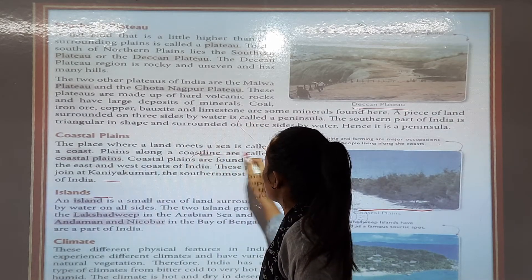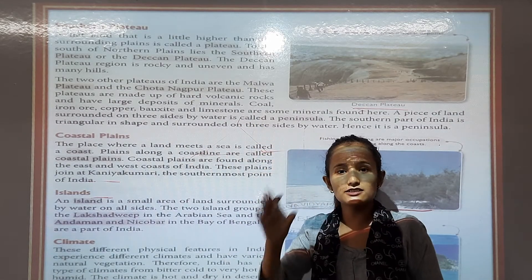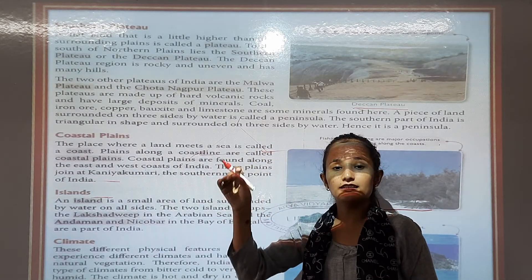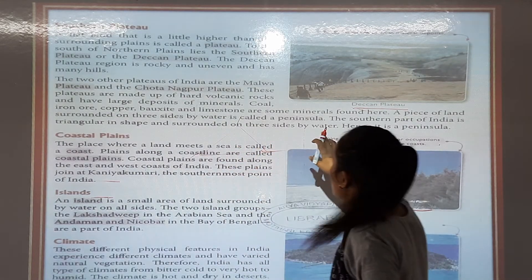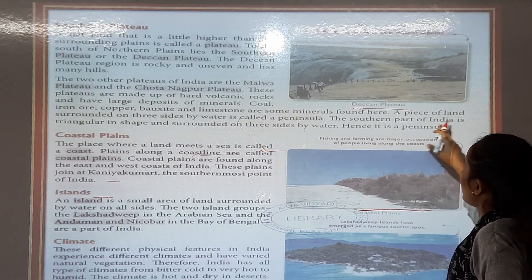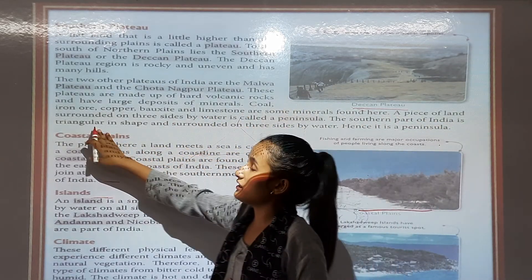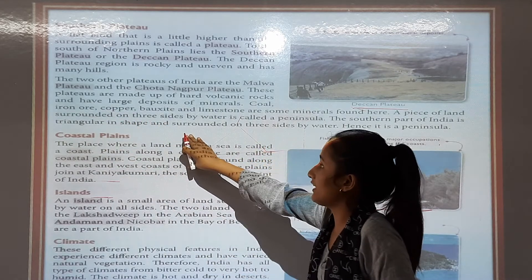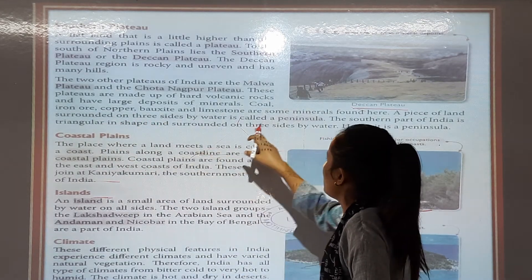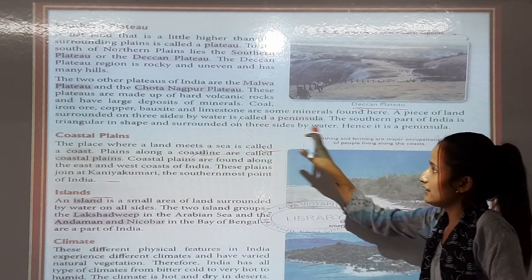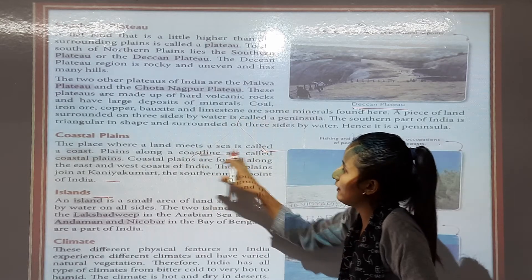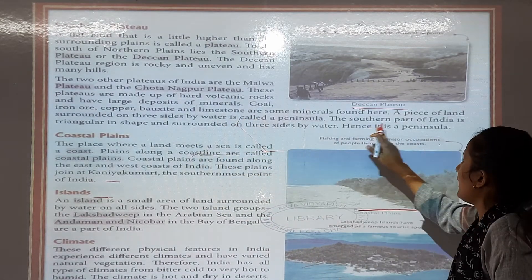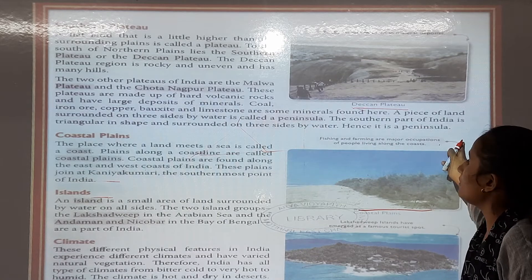There are three sides of water, so we call this a peninsula. The southern part of India is triangular in shape and is surrounded on three sides by water — hence it is called a peninsula.